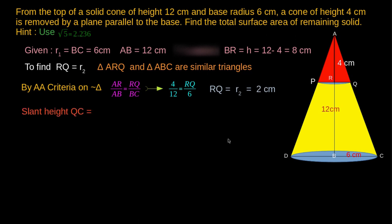To find the slant height of the frustum of the cone, i.e., QC, we have a formula: L equals square root of H squared plus (R1 minus R2) whole squared. On substitution, we get square root of 8 squared plus (6 minus 2) whole squared. On simplification, we get the value as 4 root 5 cm.